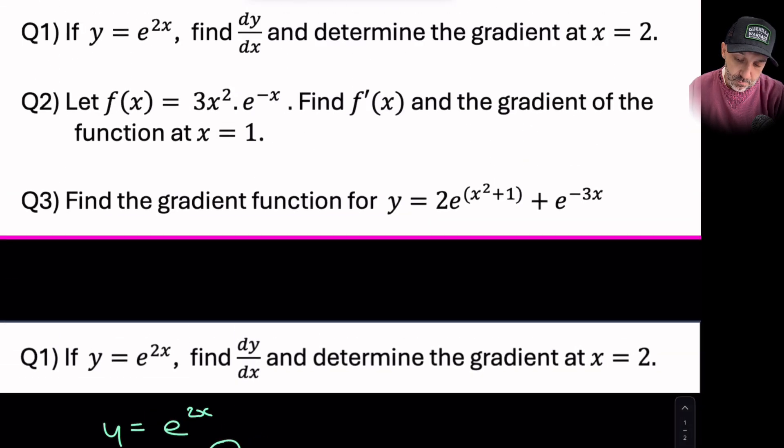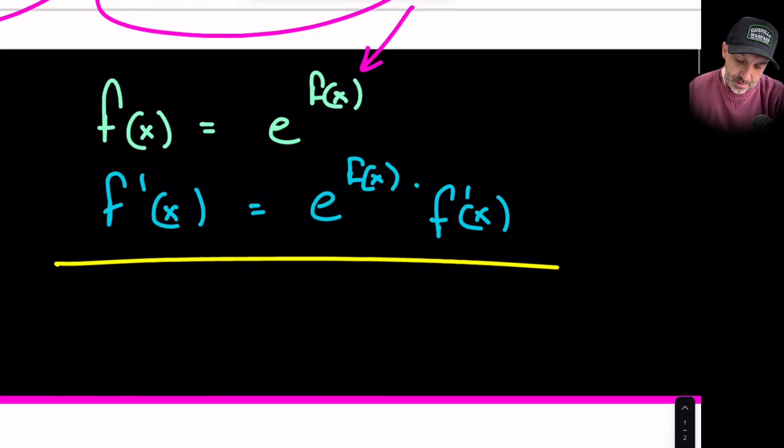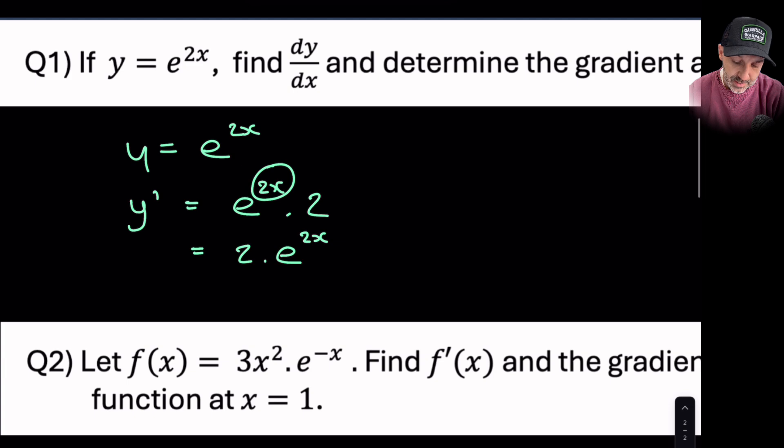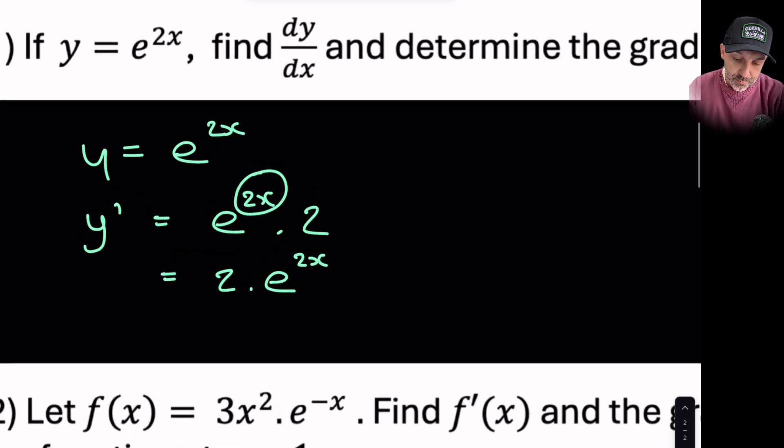So therefore we will just get 2 times e^(2x). I'll just remind you here in blue was what my rule was. It was basically to leave the power and the indice still attached to the e, but then we must multiply by the derivative of that power. And so that's what I've done down here, and I've ended up with 2e^(2x).